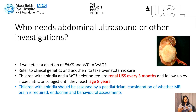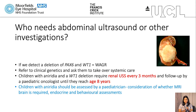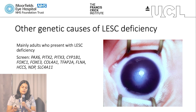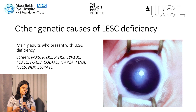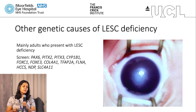Children with aniridia should be assessed by a paediatrician. Even if they're found to have a PAX6 mutation alone, based on the talks we heard from James yesterday, we need to consider whether we should undertake an MRI brain early in childhood, and they should be assessed for endocrine and behavioural assessments. When an adult presents — often the case in my clinics — with limbal epithelial stem cell deficiency, we need to consider whether to test for PAX6, but there are a range of other genes that can contribute to this as well.